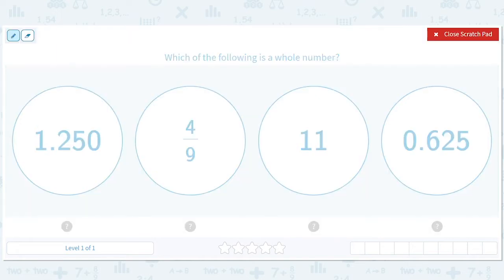A whole number is a number like 0, 1, 2, 3, 4, 5, etc. Which of these numbers looks like that? 11.